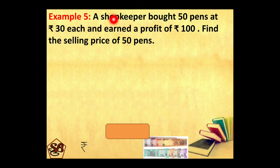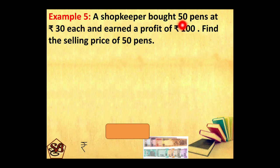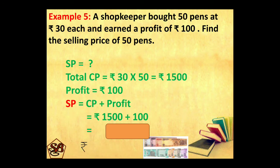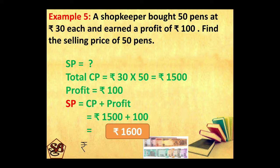A shopkeeper bought 50 pens at Rs. 30 each and earned a profit of Rs. 100. Find the selling price of the 50 pens. Now the shopkeeper bought 50 pens and the cost price of 1 pen is Rs. 30. After selling he earned a profit of Rs. 100. So first we will find out the cost price of 50 pens by multiplying 30 into 50, which is equal to Rs. 1,500. Profit is Rs. 100, so selling price will be cost price plus profit: Rs. 1,500 plus 100, which is equal to Rs. 1,600. So the selling price of the 50 pens is Rs. 1,600.